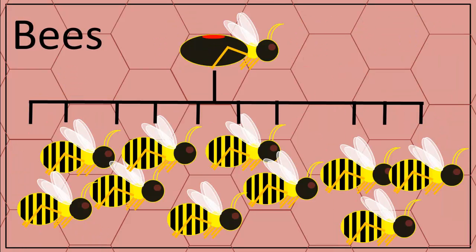The worker bees in a beehive are all sisters. They all hatch from eggs laid by the queen bee, and they are infertile, so their own genes can't be passed to the next generation. They simply serve the queen until they die. Consequently, worker bees can be considered an extension of the queen bee's phenotype. What they do, and how they do it, depends on genes that they inherit from the queen.